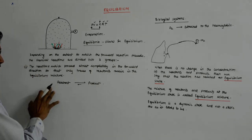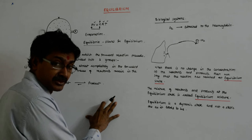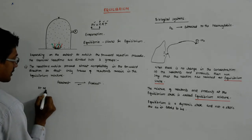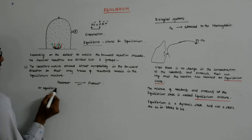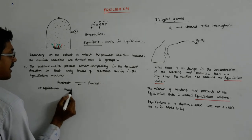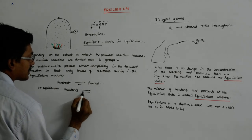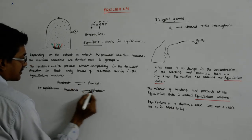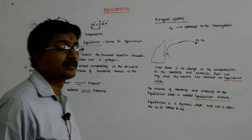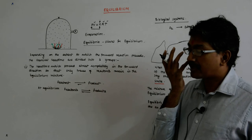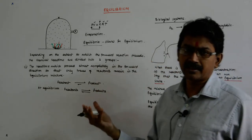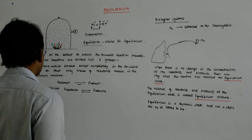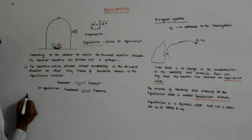At equilibrium, the forward and reverse rates become equal. A point comes where reactants and products keep interchanging — as much reactant becomes product, as much product becomes reactant. That is one of the types.